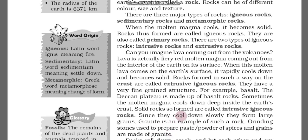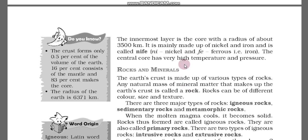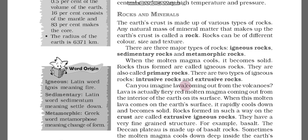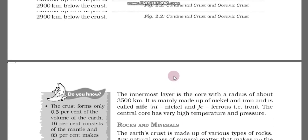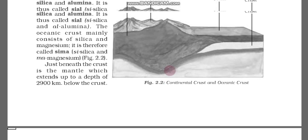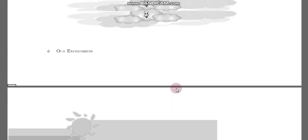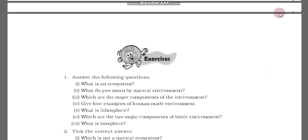So today we covered this chapter and learned about different types of rocks and minerals. The earth is made up of three layers: crust, mantle, and core. Tomorrow we will do the rest of the chapter. Thank you and have a nice day.